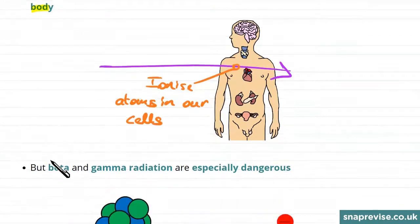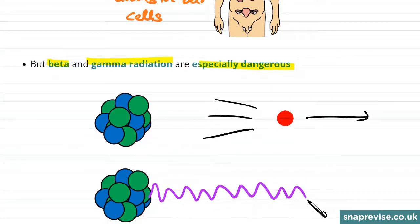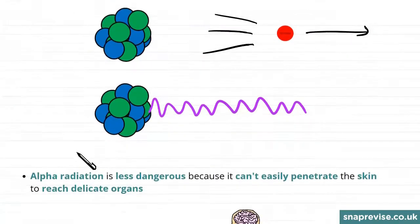It turns out that beta and gamma radiation are especially dangerous when we're talking about radiation hitting us from the outside. So remember, beta radiation is this fast-moving electron, whereas gamma radiation is a wave. These two types are more dangerous than alpha particles when they're coming from outside our body.